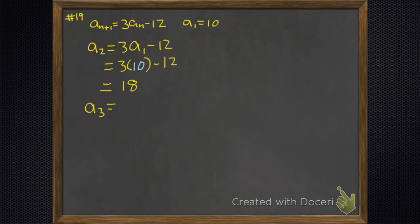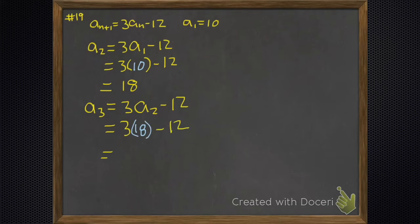My answer was 18. Next was a_3. That's three times a_2 minus 12. a_2 was 18. So we clean it up and it's 42. The answer to everything.